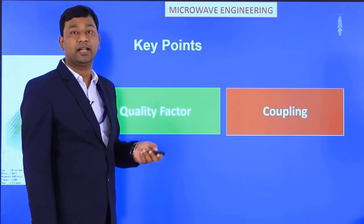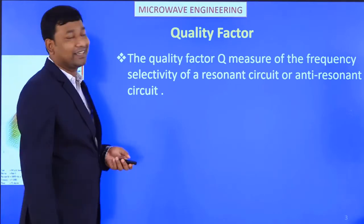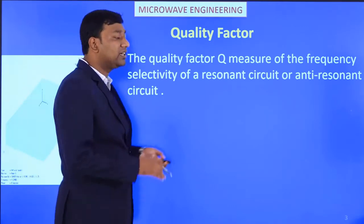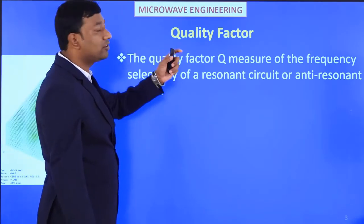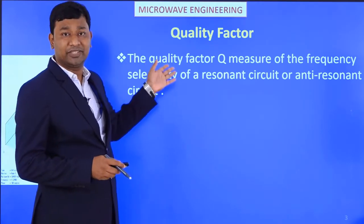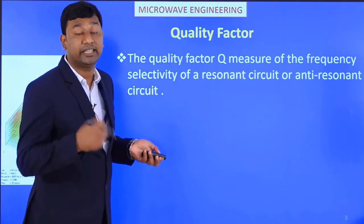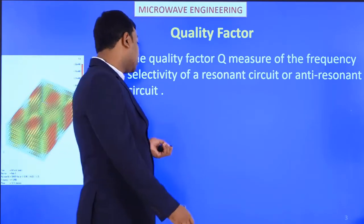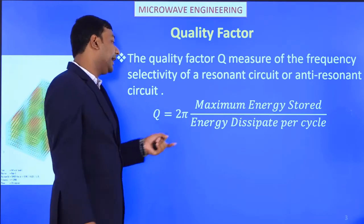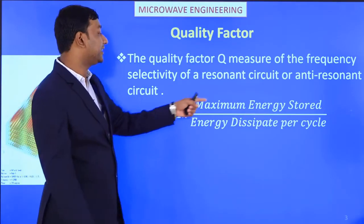The quality factor Q is a measure of the frequency selectivity of a resonant circuit or anti-resonant circuit. We have already seen those things in network theory subjects for RLC resonators. The same concepts will be considered here for microwave cavity resonators. Q equals 2π times maximum energy stored divided by energy dissipated per cycle.